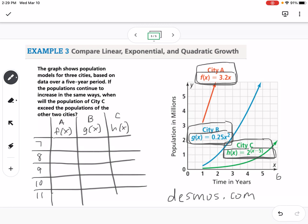So then I would plug that in. So I would take for city A, I would take 3.2 times 7, and I get 22.4. Then I would get 25.6, 28.8, 32.0, and 35.2.